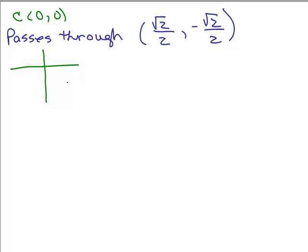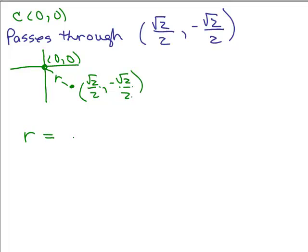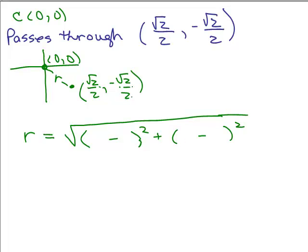So this point is somewhere in the fourth quadrant — square root of 2 over 2, negative square root of 2 over 2. Here's the center of the circle; that's not part of the circle. So the radius is the distance between those two points. Let's use the distance formula. I'm going to write r instead of d. We're going to use the square root because that's the actual formula — the difference of the x terms and the difference of the y terms.